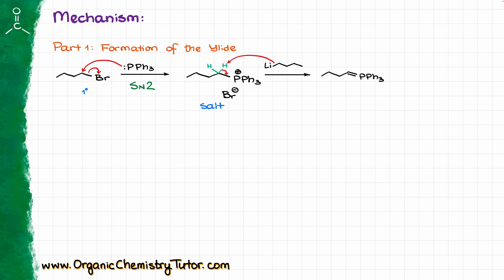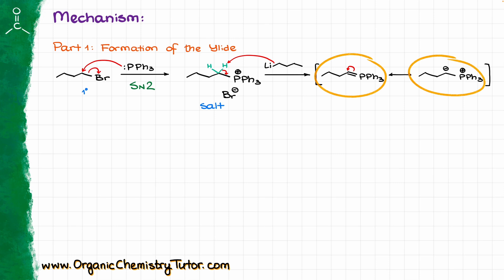We can also show the resonance structure for this phosphoylide by taking the pi bond and moving those electrons towards the carbon. So you could potentially draw your ylide with a double bond, or with a plus/minus charge. Both of those are correct, and different instructors prefer different forms, so pay close attention to whichever structure your instructor uses in class and go with that.